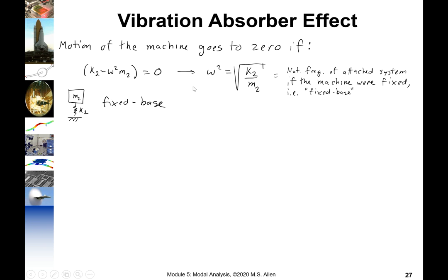Here it is reviewed. Interesting to note that that natural frequency is the natural frequency of the attach system if we fixed its base to ground. So usually the machine would be right here. But if we replace that machine with a fixed base, then this is just a one degree of freedom system. And by inspection, the natural frequency is square root of k2 over m2. So what we're doing is we're tuning our attached system so that its fixed base natural frequency is equal to the excitation frequency or the frequency we're trying to cancel.